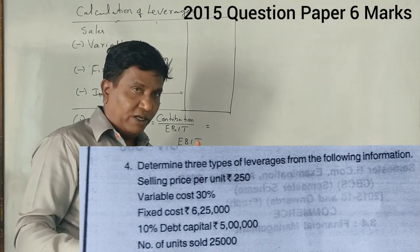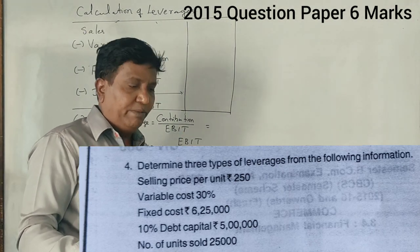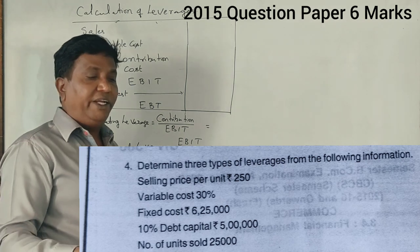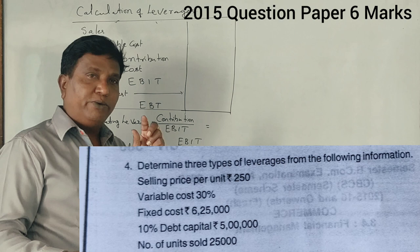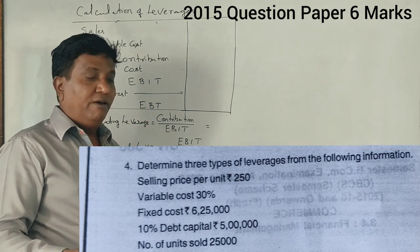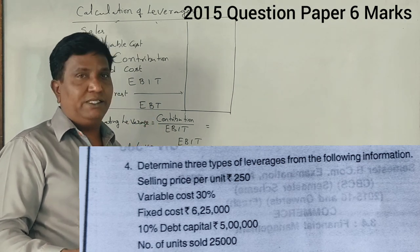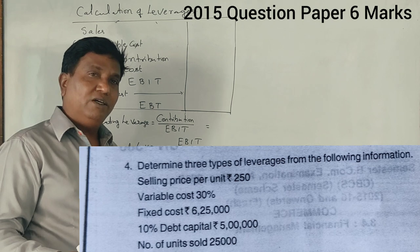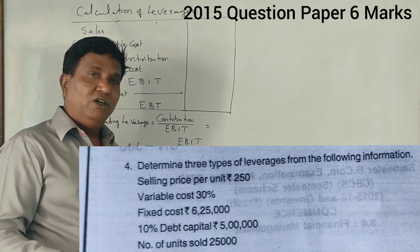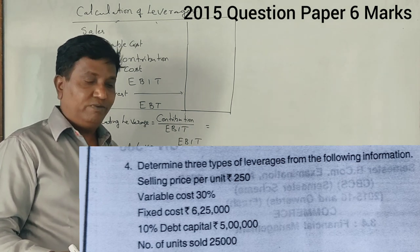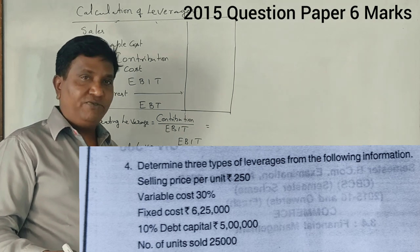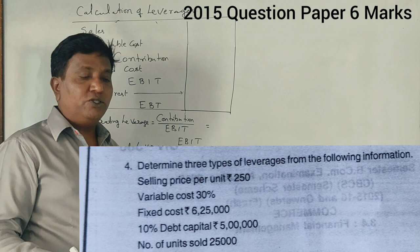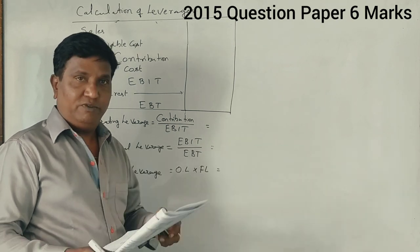This is 2015 question paper, again similar type. Determine three types of leverage from the following information: Selling price per unit is 250 rupees, variable cost is 30% (if nothing is given, 30% on what?), fixed cost is 6,25,000, 10% debt capital is 5 lakhs, number of units sold is 25,000.